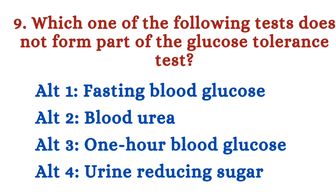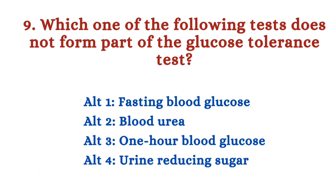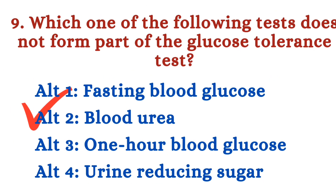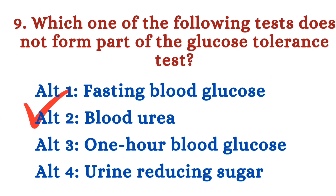Next question: Which one of the following tests does not form part of the glucose tolerance test? Option 1: Fasting blood glucose. Option 2: Blood urea. Option 3: One-hour blood glucose. Option 4: Urine reducing sugar. The right answer is Option 2 — blood urea.